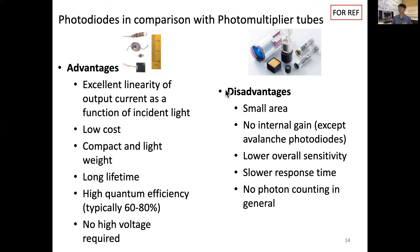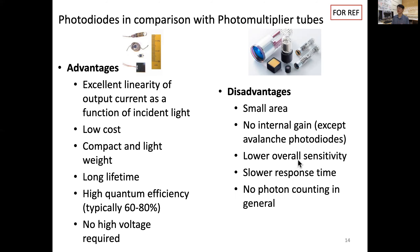The disadvantages of the photodiode — which are advantages of PMT — include that the active area can be very small, while PMT can have a fairly large photocathode. Photodiodes do not have internal gain, except for the avalanche photodiode, whereas PMT has a huge gain mechanism through its multiple dynodes that multiply the photo current. Photodiodes also have overall lower sensitivity compared to PMT, a slower response time, and generally cannot count individual photons, so their applications can be quite different.